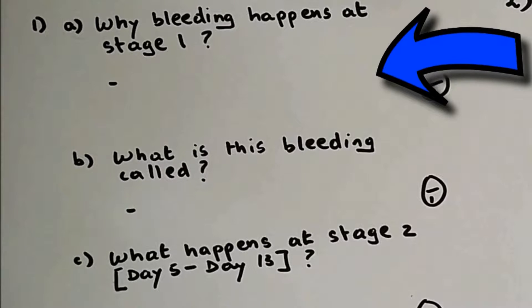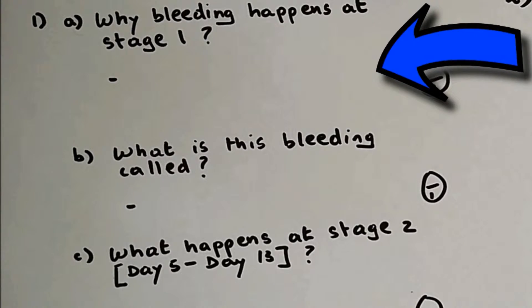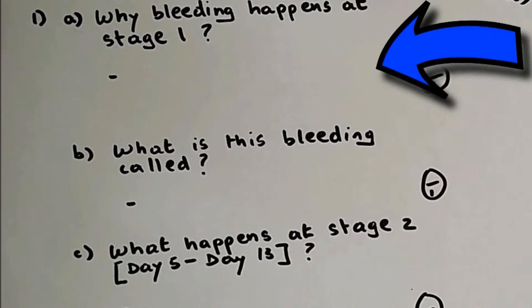Question number one: why bleeding happens at stage one? Now bleeding happens at stage one because the lining of the uterus breaks down.